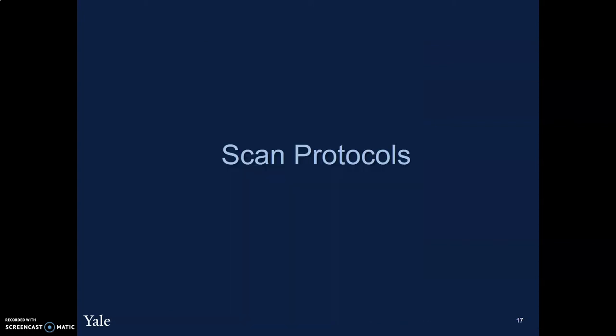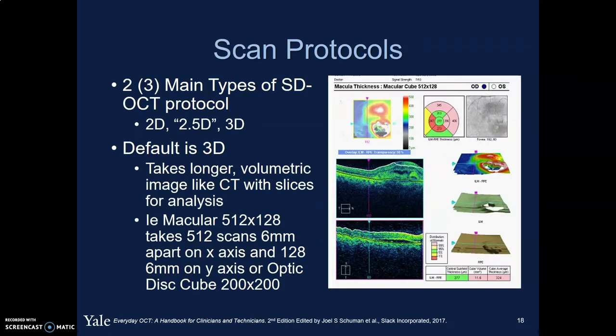A couple of words about the different scan protocols available. There are two basic main types on spectral domain OCT machines, plus an intermediate one. The default scan protocol is 3D, and this is essentially what most of our scans are. It takes a little bit longer to acquire, but it creates something similar to a CT scan — it takes a volumetric image and creates a lot of slices that we can scan through and analyze. Our default scans like the macular 512 by 128 and the optic disc cube 200 by 200 fall under this category.